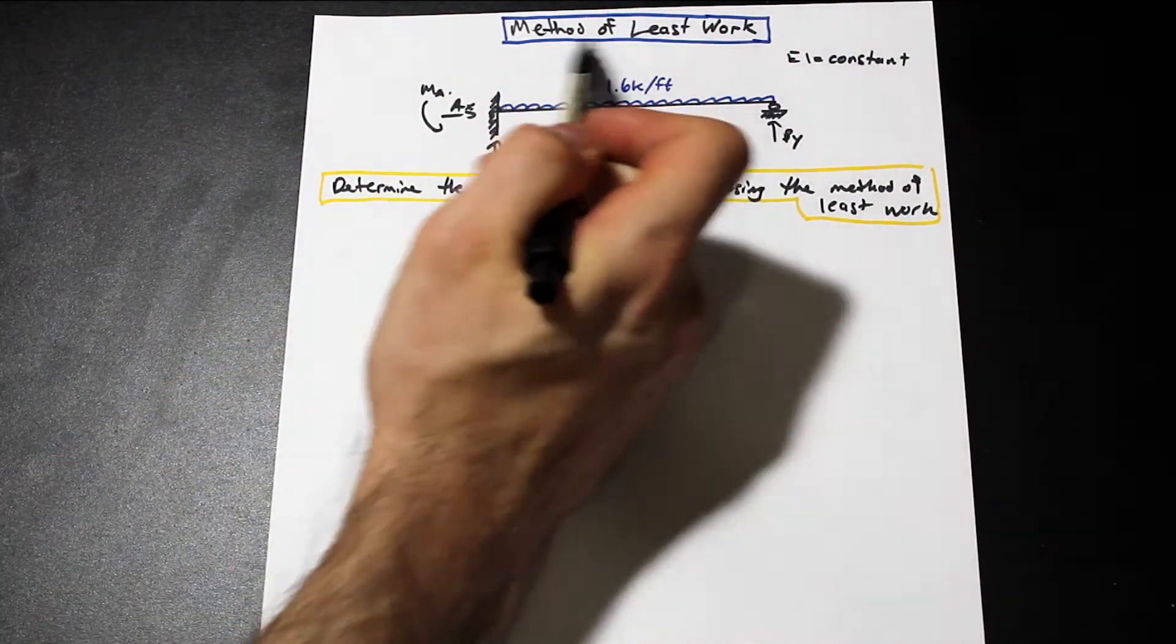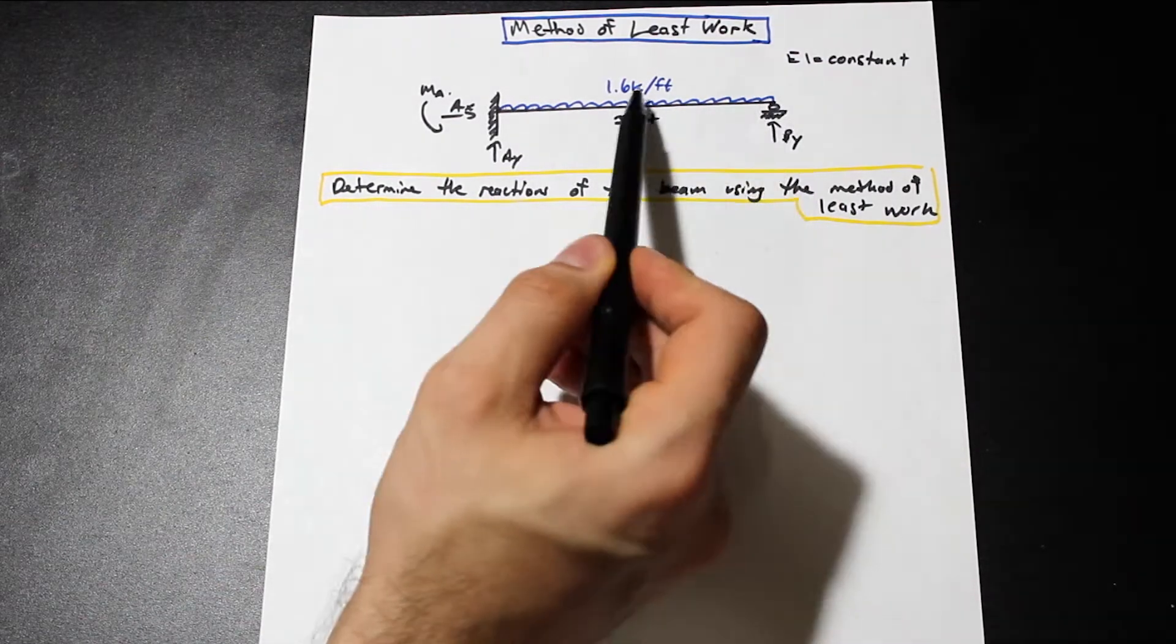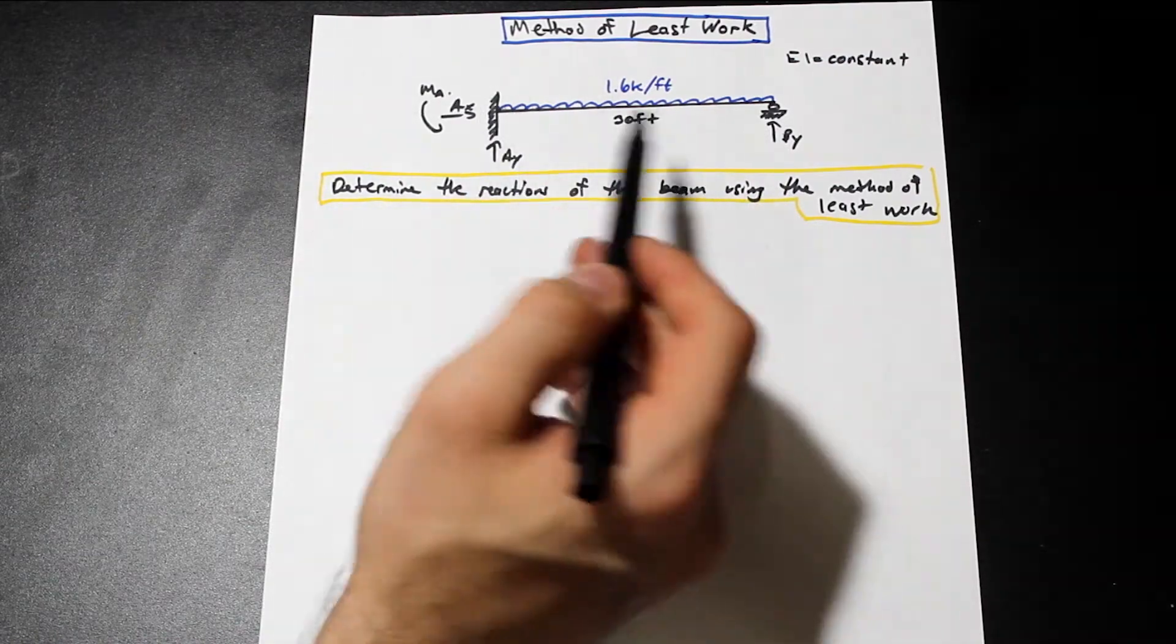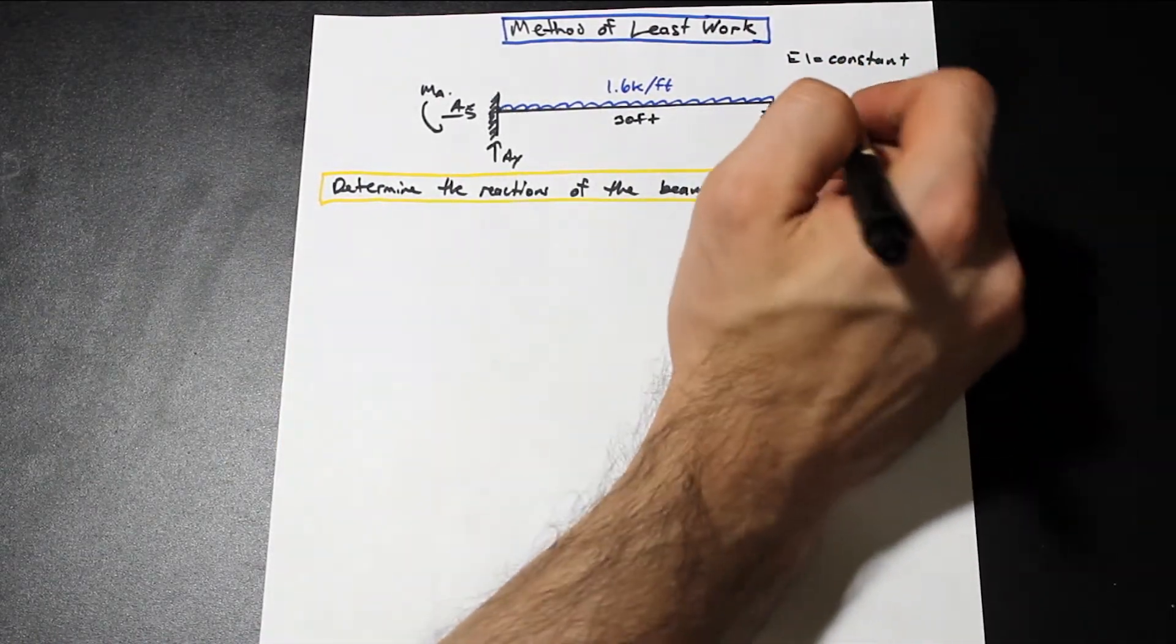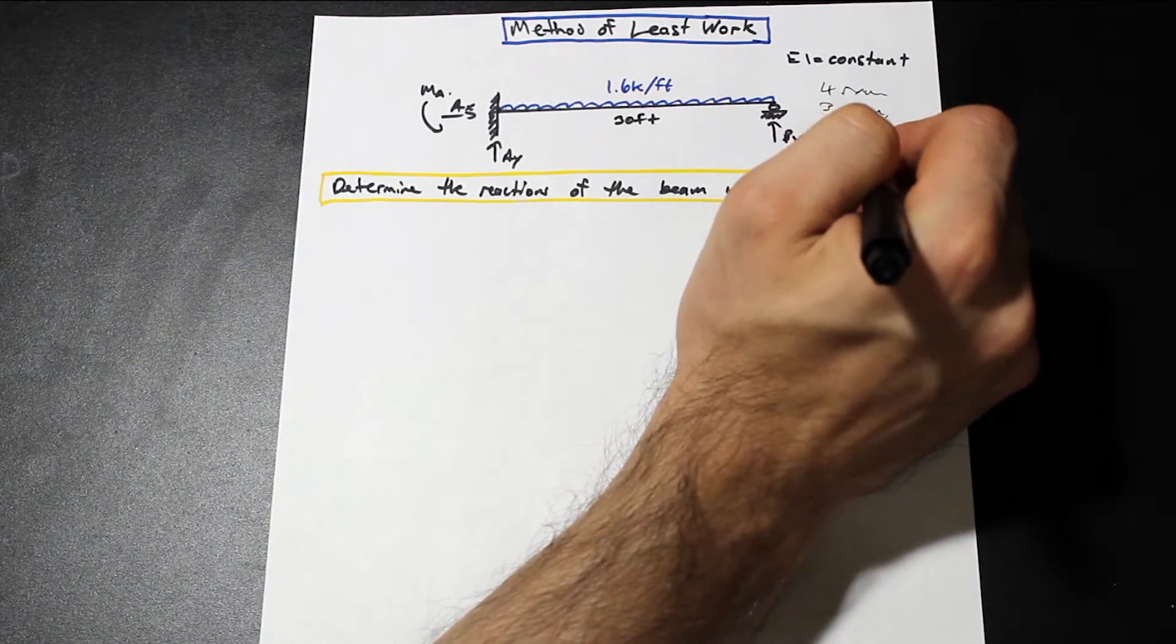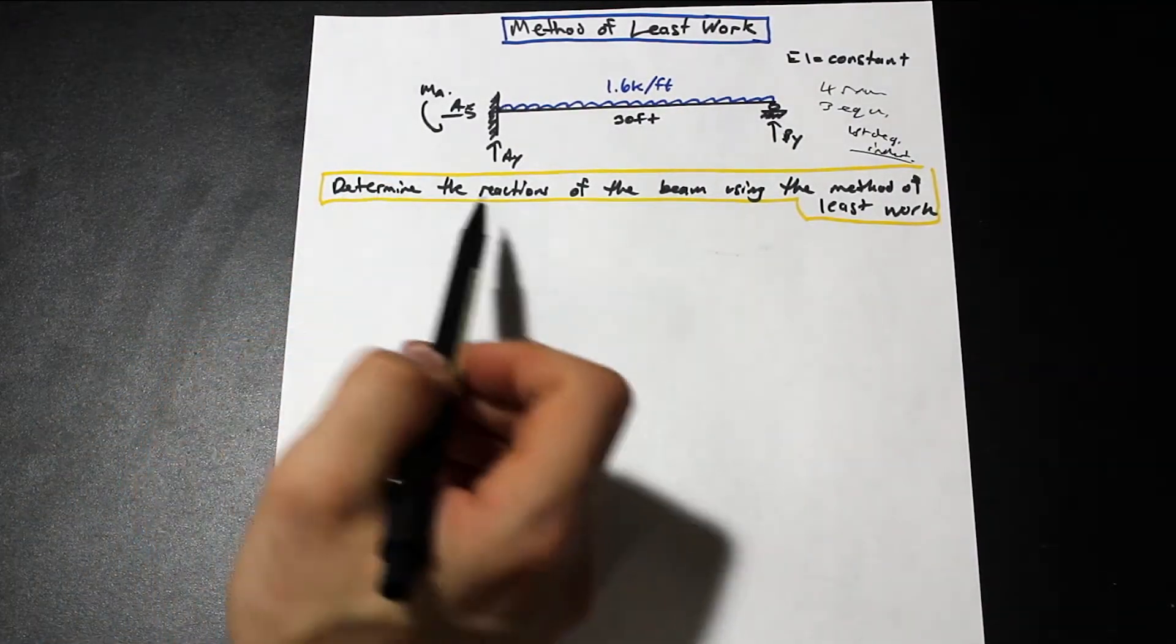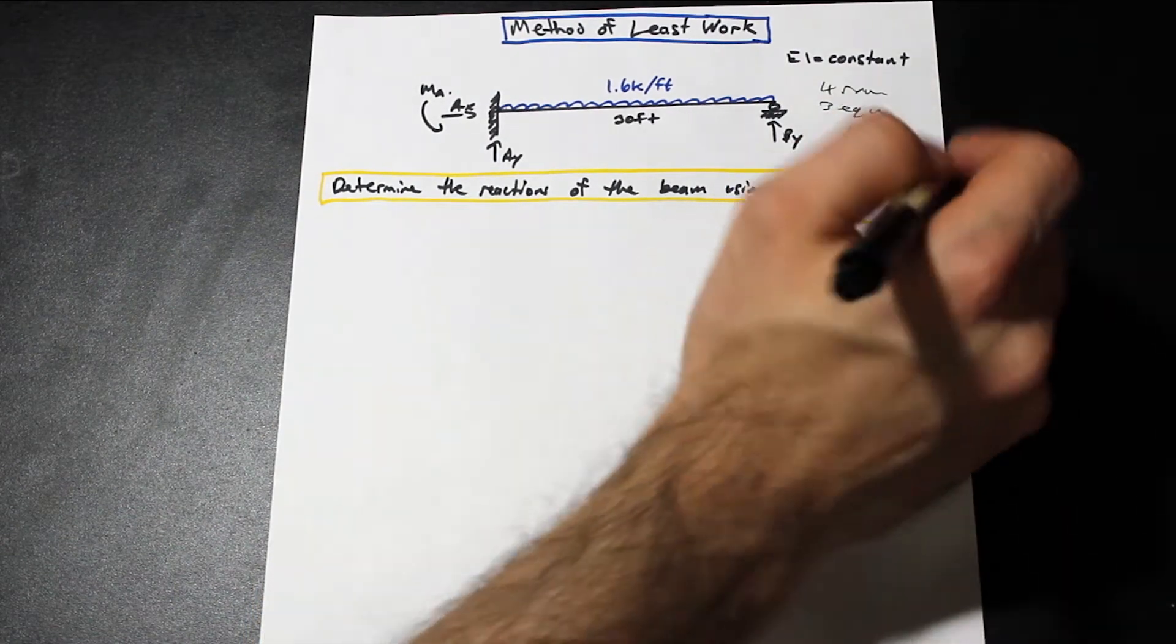So we have a method of least work problem here. We have a cantilever beam here. We have a distributed load across of 1.6 kip per feet, and we have a reaction BY. So right off the bat, we can tell that we have three reactions here and one here. So we have four reactions, and three equations, so we have first degree indeterminate. So now that we know that, let's take a look at the question. It asks us to determine the reactions of the beam using the method of least work.